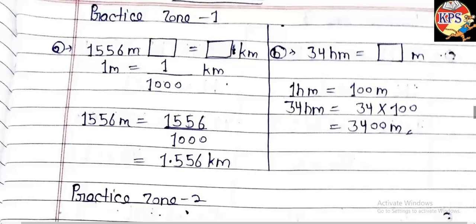I had already explained how to convert meters into kilometers. First, we write: 1 meter equals 1 upon 1000 kilometers. So 1556 meters equals 1556 upon 1000. Because three zeros are given in the denominator, we have to place the decimal point before three numbers from the last. So 1556 meters is now converted into kilometers.